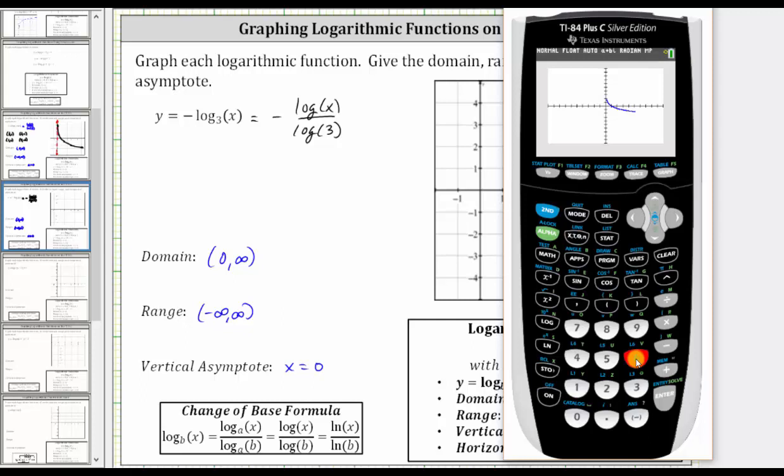So now we have a decent graph of the function. We could adjust the window, but from here we should be able to tell that the vertical asymptote is x equals zero. The domain is the open interval from zero to infinity, and because the graph does go down as well as up indefinitely, without any holes or breaks, the range is the open interval from negative infinity to positive infinity.